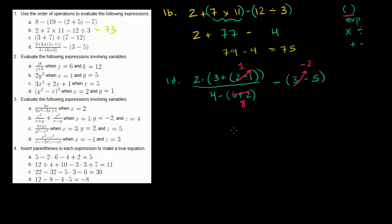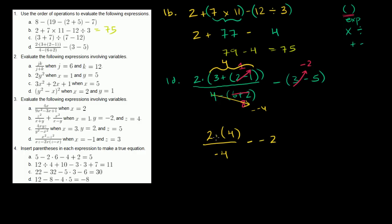Continuing with the parentheses: 3 plus 1 is 4, so the numerator becomes 2 times 4, which is 8. The denominator is 4 minus 8, which is negative 4, minus negative 2. A minus of a negative is a plus, so the denominator becomes negative 4 plus 2, which is negative 2. Wait — 8 divided by negative 4 is negative 2, and then plus 2.